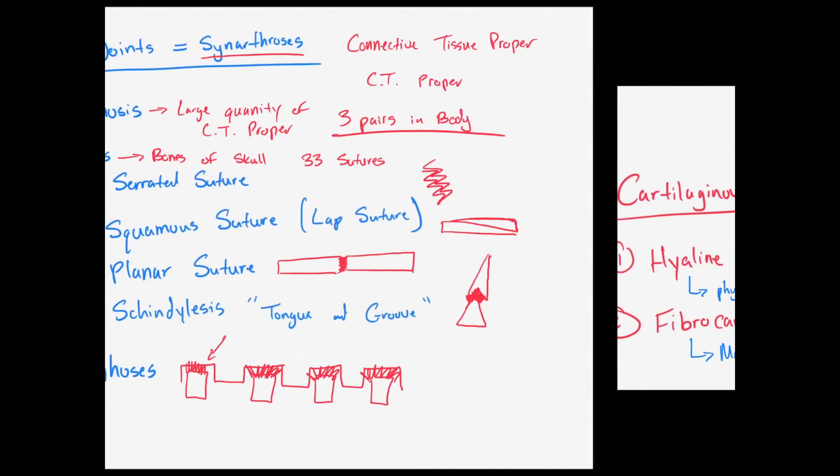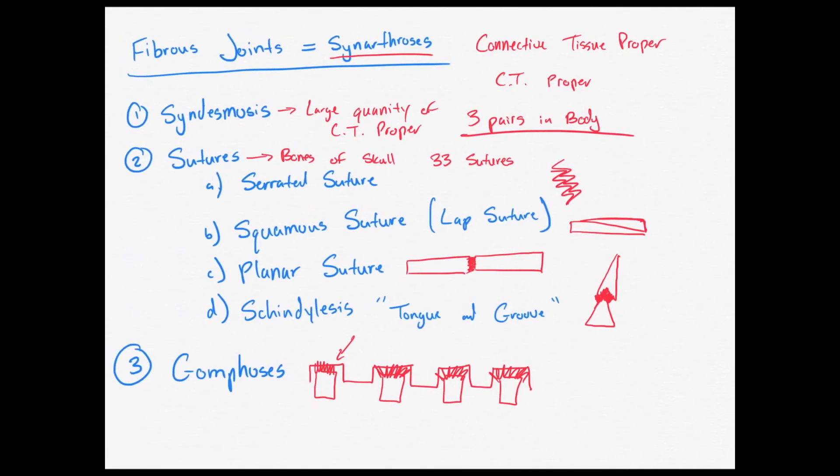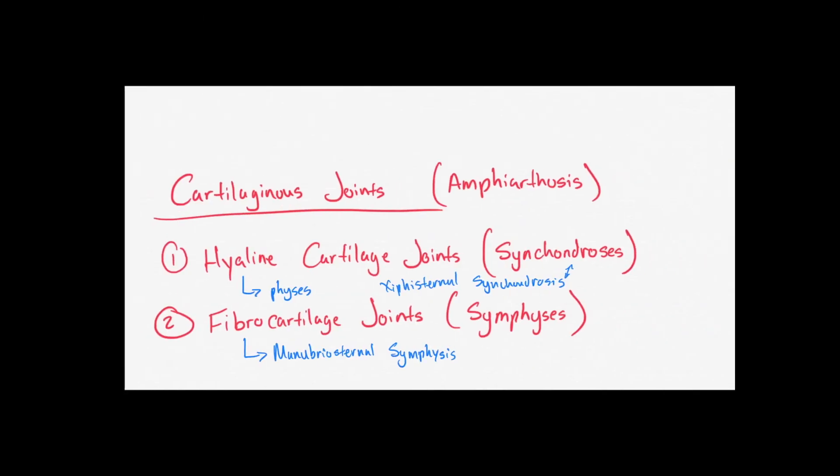So it is important to know the main classifications of these joints, but it's more important in my mind that you know the more specific classifications, such as the hyaline cartilage joint, the fibrocartilage joint, as well as the syndesmosis, the sutures, and the gomphoses. Okay, so keep that in mind as you guys study over arthrology.